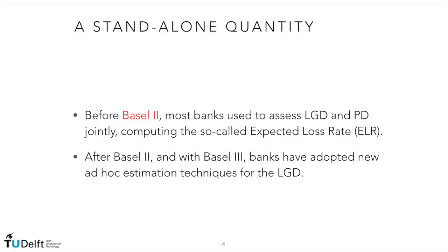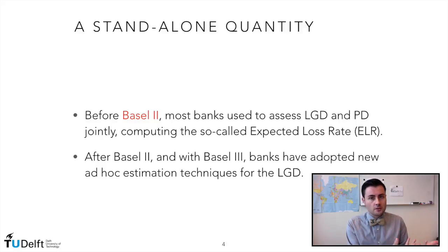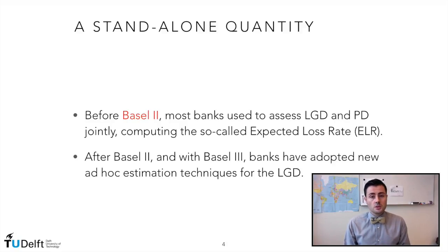A very interesting topic is the relationship between LGD and PD — that is to say, between what we expect to lose and the probability of default. Most models assume the independence of these two quantities, LGD and PD. You can imagine this is not really realistic, and this accounts for what goes under the name of model risk. We will see these in more detail later when we consider the different models and discuss the empirical findings related to this relationship.